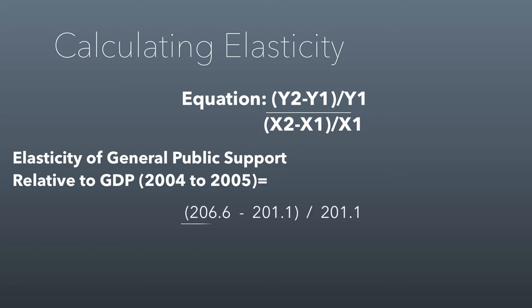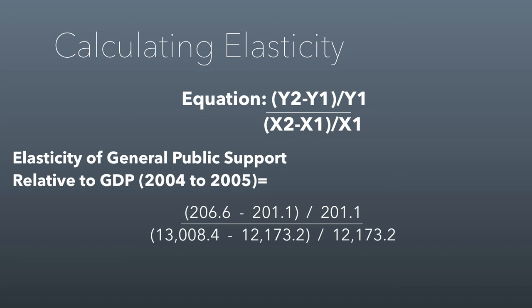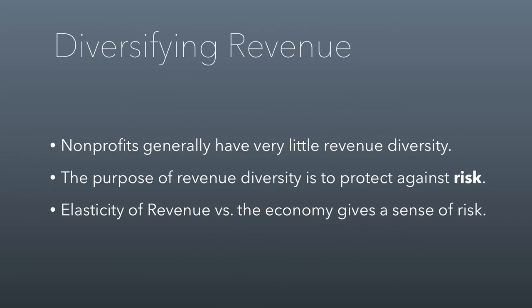So let's do some math. The equation for elasticity is a rate of change calculation divided by another rate of change — that's all elasticity is, comparing one rate of change against another. Here we have elasticity of general public support relative to GDP. So I'm calculating the rate of change for general public support for March of Dimes from 2004 to 2005 — we already know that's 2.73% — and dividing that by the rate of change in the economy. It turns out you don't have to use the same units; on top it's millions, on the bottom it's trillions, but we only care about the percentages that result. When we do that math, we get an elasticity of 0.399.